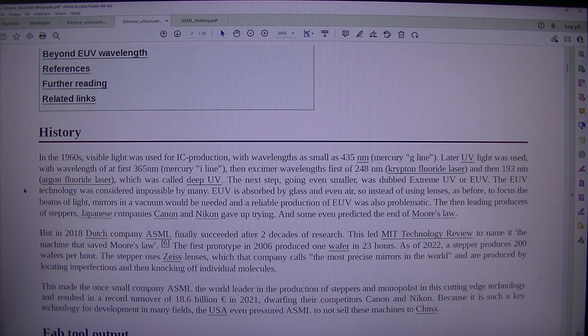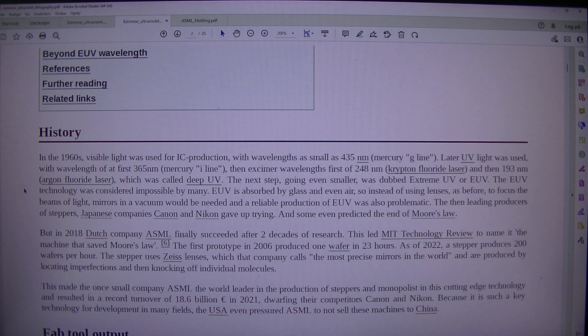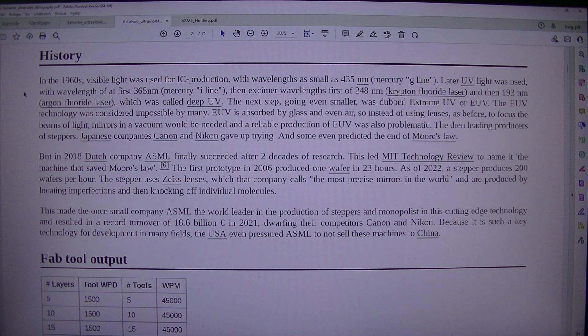History: In the 1960s, visible light was used for IC production with wavelengths as small as 435 nm mercury G-line. Later UV light was used with wavelength of at first 365 nm mercury I-line, then excimer wavelengths first of 248 nm krypton fluoride laser, and then 193 nm argon fluoride laser, which was called deep UV.